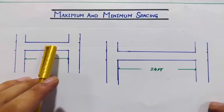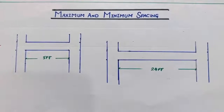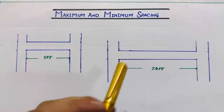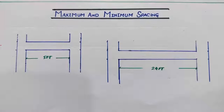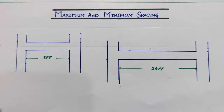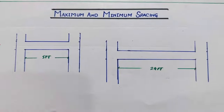Welcome back to 7 Engineers YouTube channel. Today's topic is very interesting — about maximum and minimum spacing between two columns for a normal residential building, not a commercial building, up to G+1 story (double story). If you are new on this channel, please like and subscribe. Let's get started.